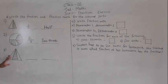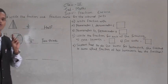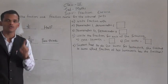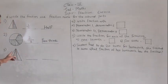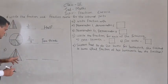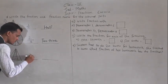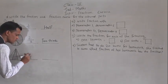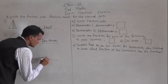Next, here one triangle is given. That triangle is divided into three equal parts and out of three parts, one part is colored. So write the fraction for that colored part: out of three equal parts, one part is shaded. Write one by three, means one third. Write the name: one third.